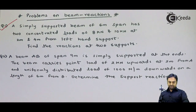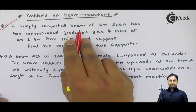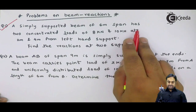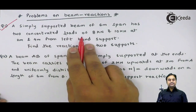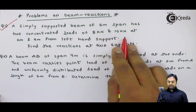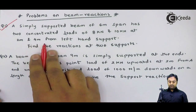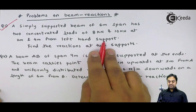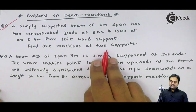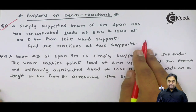Let us read the question. A simply supported beam of 6 meter span has two concentrated loads of 8 kilo Newton and 10 kilo Newton at 2 meters and 4 meters from the left hand support. Find the reactions at the two supports.